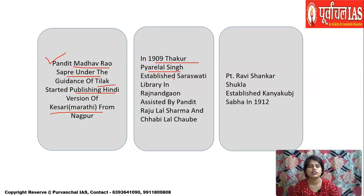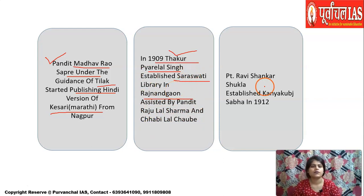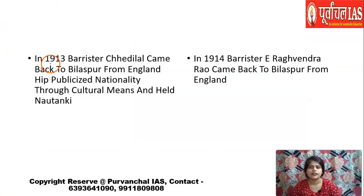In 1909, Thakur Pyarelal Singh established Saraswati Library in Rajnandgaon — the same place where he had led the first student strike. He was assisted by Pandit Rajulal Sharma and Chabilal Chobe. Then in 1912, Ravi Shankar Shukla established Kanya Kunj Sabha.